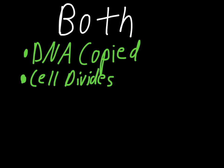Finally, some similarities: the DNA is copied in both instances, which makes sense because the new cell requires that DNA, and the cell does divide at the end — although the process looks a little different in each case. It's good to know the similarities and differences for these two, as that's probably what you'll see on evaluations about this part of the chapter. Thank you for watching, and I'll see you in class.